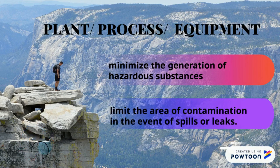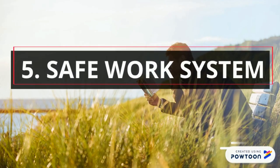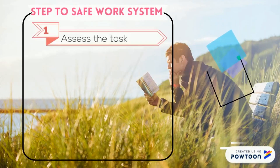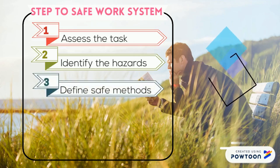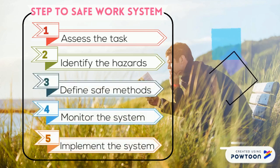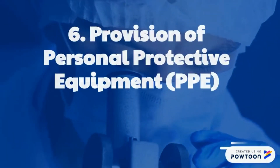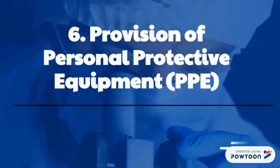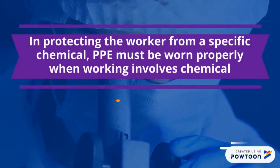Control measure 5: Safe work system. Steps to a safe work system include: assess the task, identify the hazards, define safe methods, monitor the system, and implement the system. Control measure 6: Provision of personal protective equipment (PPE) to protect the worker from specific chemicals. PPE must be worn properly when work involves chemicals.